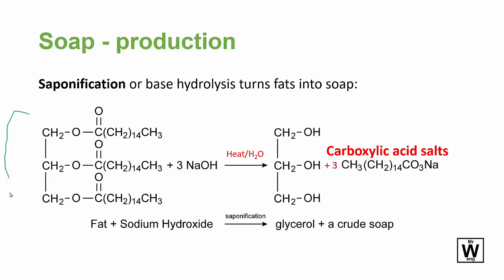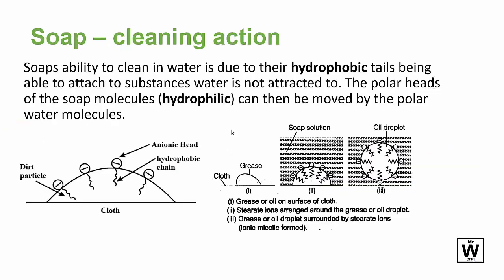You need to know this balanced saponification reaction — make sure you've got the threes in there. Grabbing a triglyceride and heating it with sodium hydroxide, you'll get glycerol out and you'll make the fatty acid salt, which is the soap.